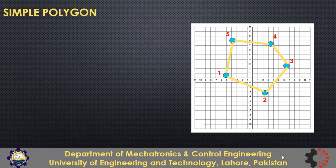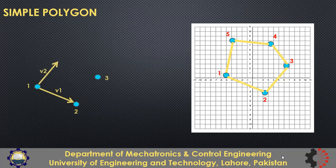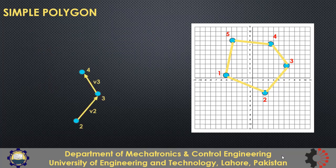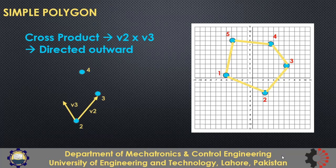In the second method, we consider each line as a vector and find the cross products of consecutive pairs of vectors. For example, consider points 1, 2, and 3. Vector v1 goes from point 1 to 2, and v2 from point 2 to 3. To find the cross product, the tails of both vectors must coincide, so we move v2 there. Applying the right-hand rule, the resultant of v1 cross v2 is directed outward from the plane. For points 2, 3, and 4, vectors v2 and v3 are used, and again the resultant of v2 cross v3 is directed outward.